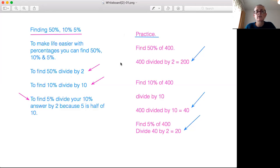Now let's find out how to find 10%. To find 10% you divide by 10. So let's look at our practice on the right here. Find 10% of 400. We divide by 10. 400 divided by 10 equals 40. So we know that 10% of 400 is 40.